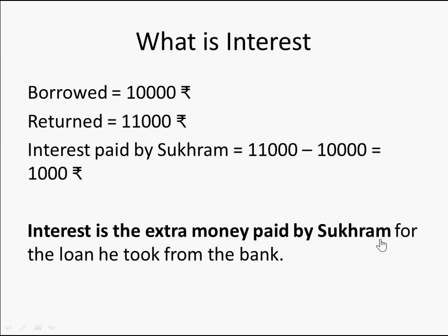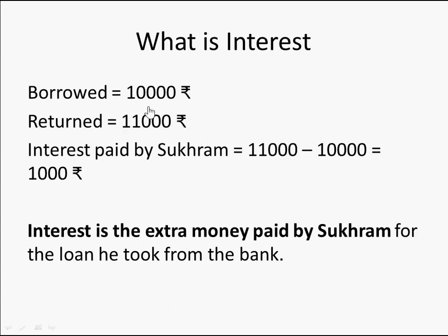This 1,000 rupees extra is the interest — the extra money paid by Sukram for the loan he took from the bank. If he takes 10,000 rupees and returns only 10,000 rupees, how is the bank going to run? The bank also needs money to keep running — to pay salaries, office expenses, etc. So this is the interest which the bank charged to Sukram: he paid 11,000 rupees, and the bank got 1,000 rupees extra.